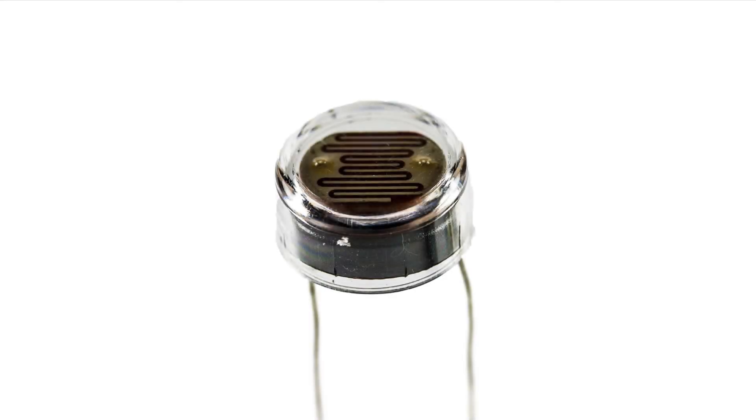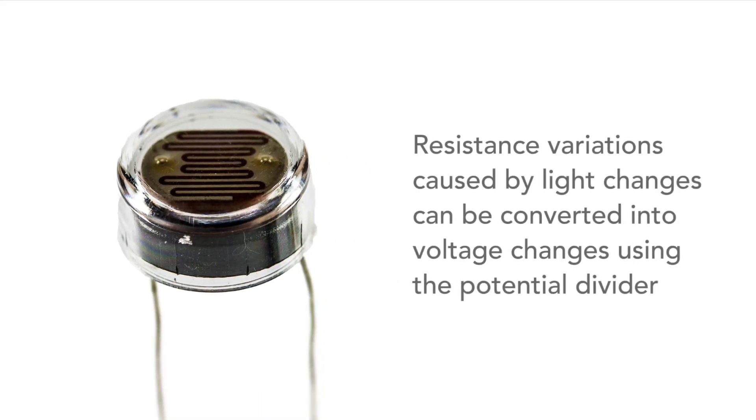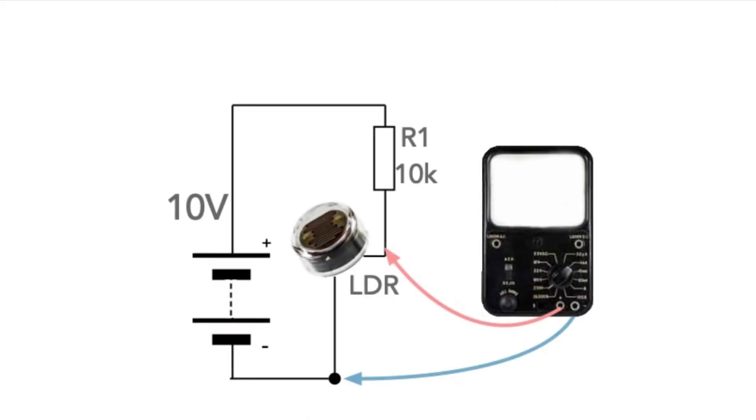This circuit is also very useful with components like light dependent resistors or LDRs, so that any resistance variations caused by light changes are converted into a varying voltage. If we place the LDR in the circuit instead of R2, then we see that any changes in the resistance of the LDR will change the output voltage.